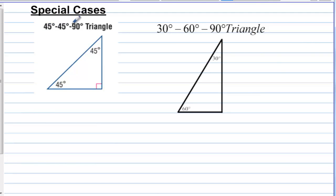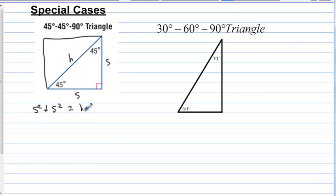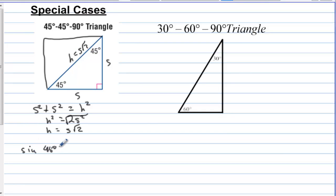Special cases: we have a 45-45-90 right triangle, which we get by cutting a square in half. If the two legs are both equal to some side s, then we find the hypotenuse: s squared plus s squared equals hypotenuse squared, so the hypotenuse squared equals 2s squared, meaning the hypotenuse equals s times the square root of two. The sine of 45 degrees is opposite over hypotenuse, which is s over s times square root of two, equal to 1 over square root of two, or square root of two over two.